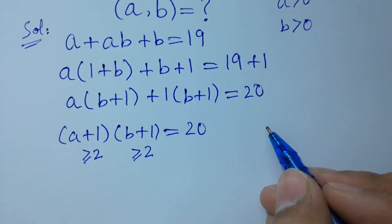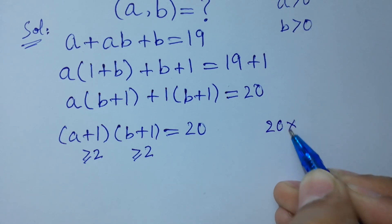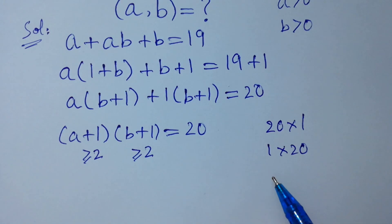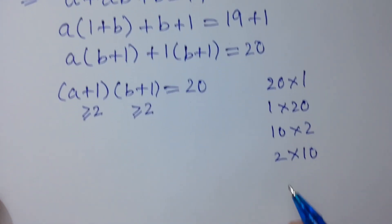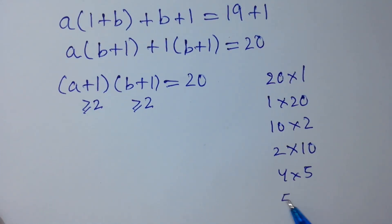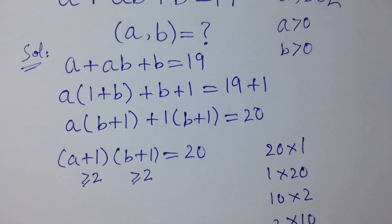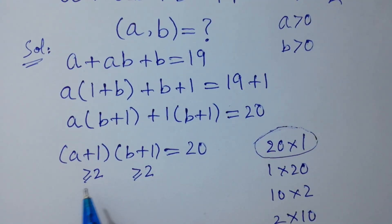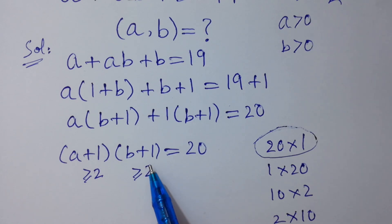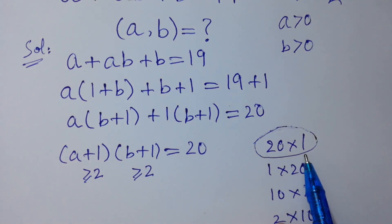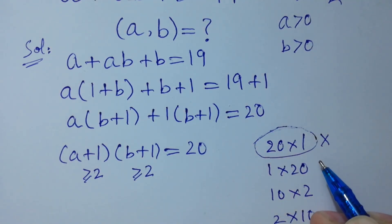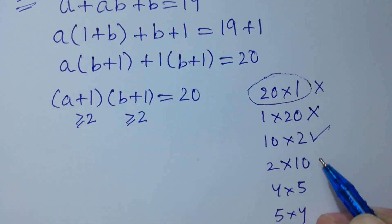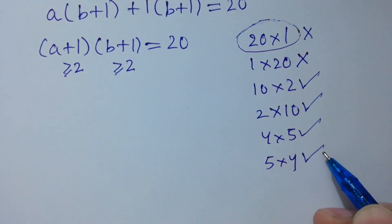We list the factor pairs of 20: 20 times 1, 1 times 20, 10 times 2, 2 times 10, 4 times 5, and 5 times 4. The cases 20 times 1 and 1 times 20 are invalid because one factor would equal 1, violating the condition that both a plus 1 and b plus 1 must be at least 2. The valid cases are 10 times 2, 2 times 10, 4 times 5, and 5 times 4.